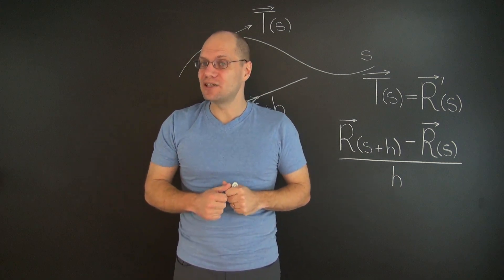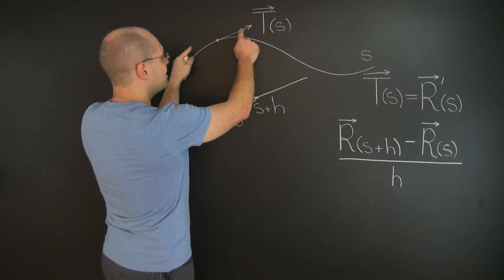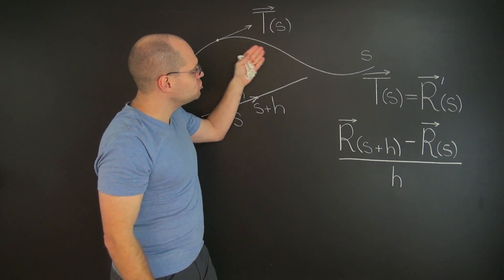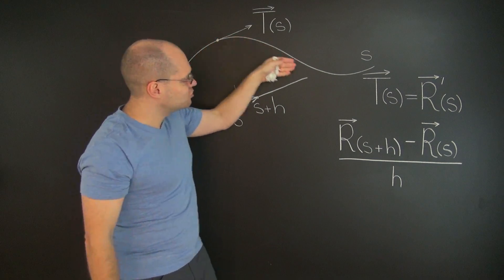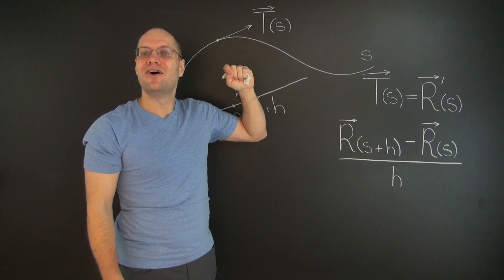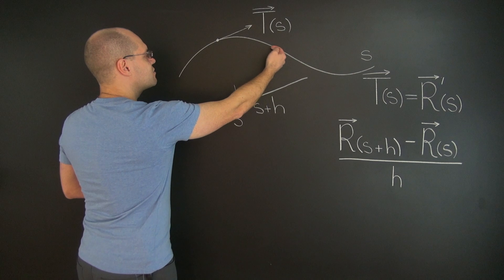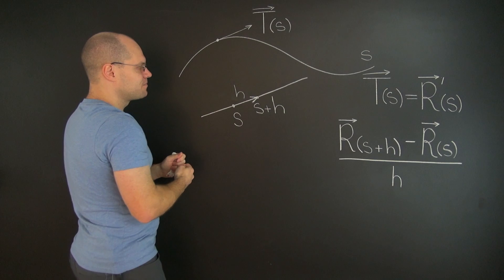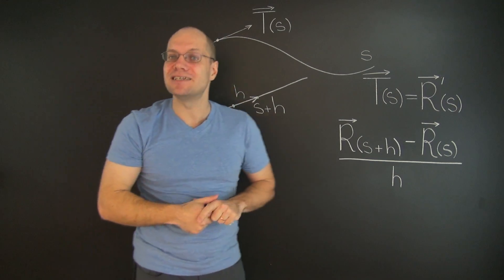One final note is in order. There are in fact two unit tangents pointing in the opposite directions. And which one you get depends on which way you chose your arc length to grow. If you chose your arc length to grow to the right, then the tangent vector will also point to the right. And if we had chosen the arc length to grow in the opposite direction, then everything here would be reversed and the unit tangent would end up pointing in the opposite direction as well.